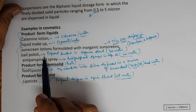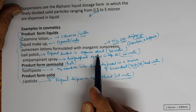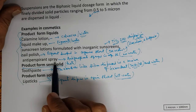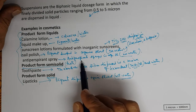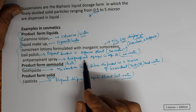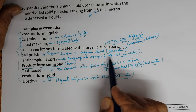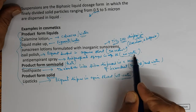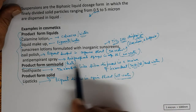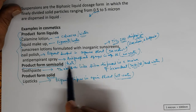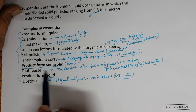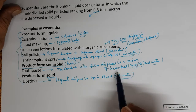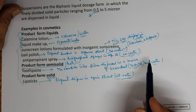Nail polish: pigment suspended in organic solvents, no water. Antiperspirant spray: antiperspirants dispersed in organic solvents, no water. Product forms that are semi-solid — that is paste — toothpaste: the abrasives like silica dispersed in a mixture of humectants, sorbitol and water.